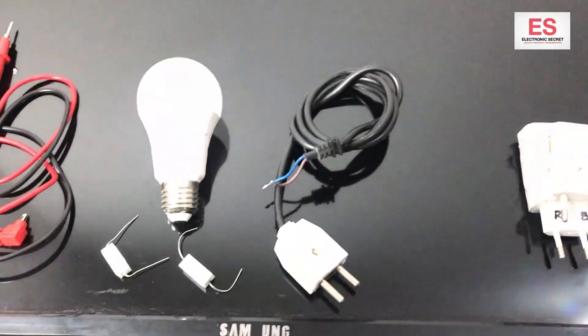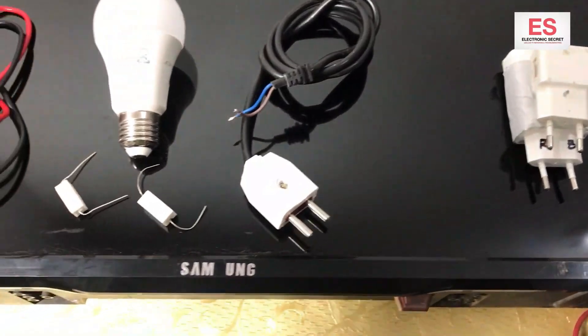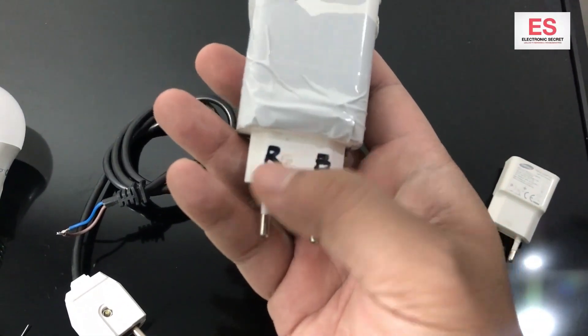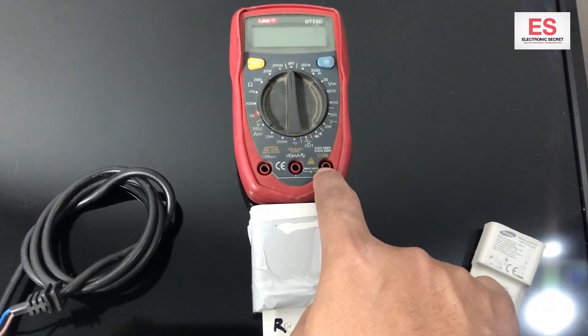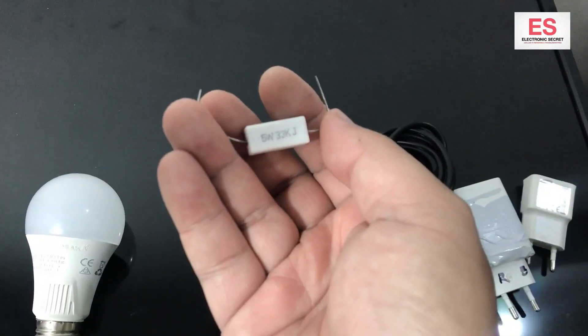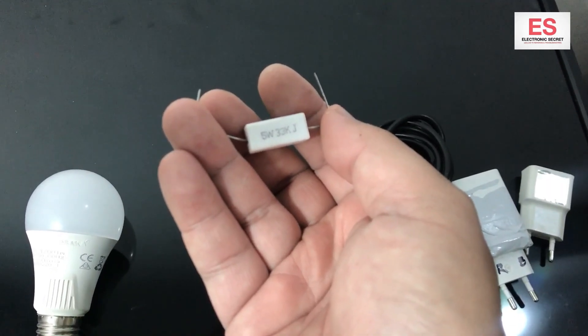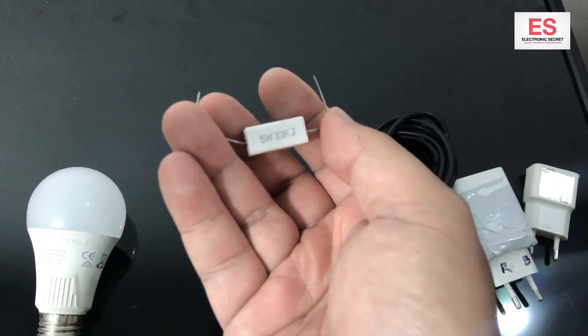I will make it using a multimeter at almost zero cost. You will need an empty casing of charging adapter, a wire marked R and B on the red and black legs so the polarity cannot be changed, a 5 watt 33 kilo ohms resistor, and an LED bulb.